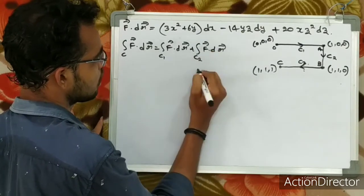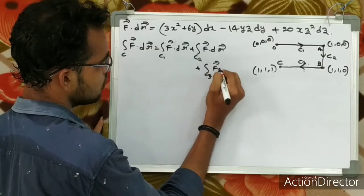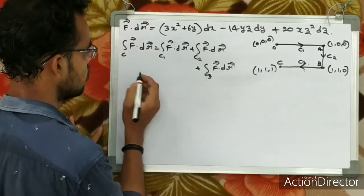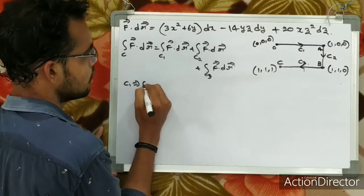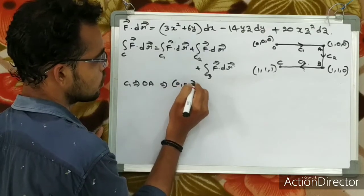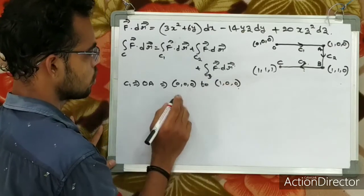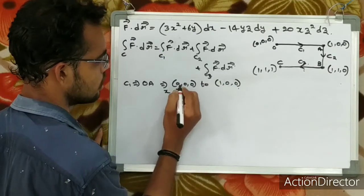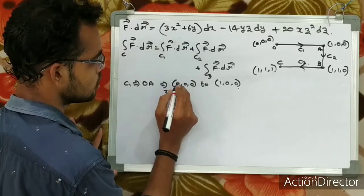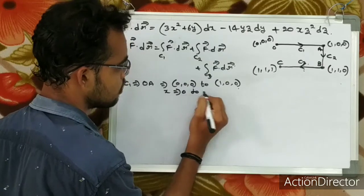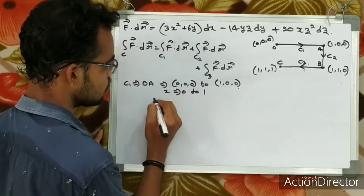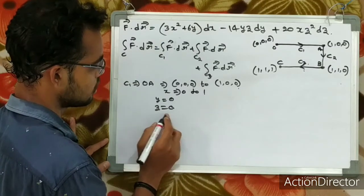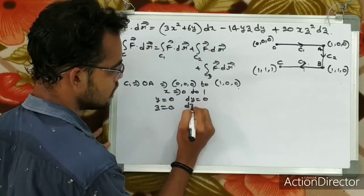So dr vector along C1, C2, C3 — we compute f vector dot dr vector for each term. For C1, the path is (0,0,0) to (1,0,0). Along this segment, y equals 0 and z equals 0. Differentiating: dy equals 0 and dz equals 0. The limits for x go from 0 to 1.